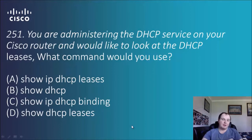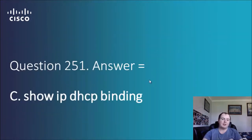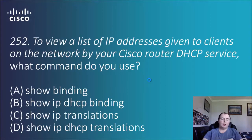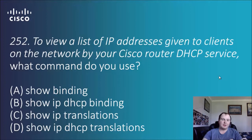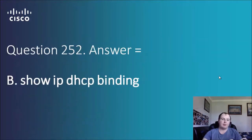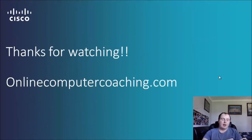Question 252: view the list of IP addresses given to clients on the network by the Cisco router DHCP service. What command would you use? Options: show binding, show IP DHCP binding, show IP translations, show IP DHCP translations. I'd probably go with show IP translations but the answer is B — 'show IP DHCP binding'. And that's all folks, thanks for joining in today!